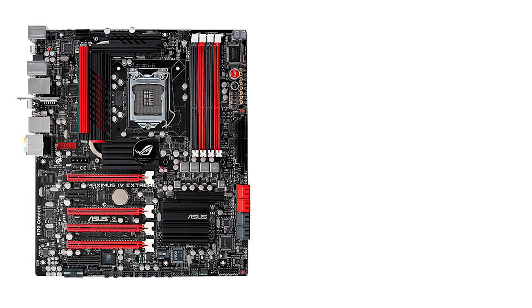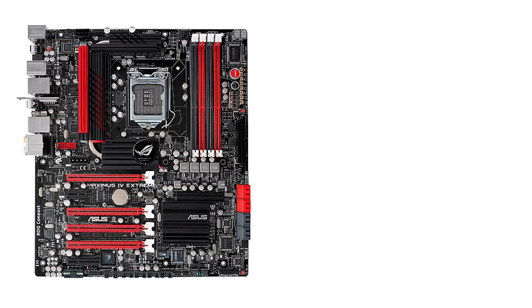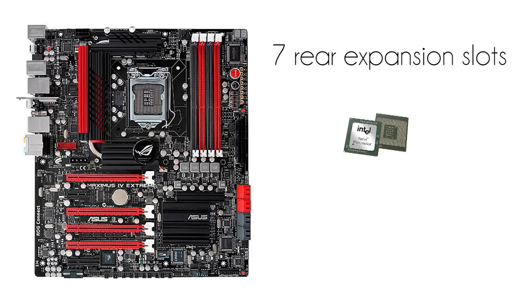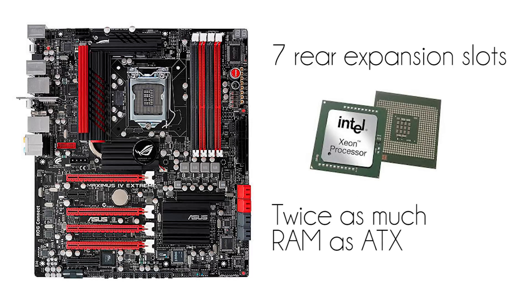On to bigger and better things! Extended or e-ATX motherboards are more expensive and larger than ATX and at up to 305mm tall by 330mm wide, they are big. They still have only a maximum of 7 rear expansion slots, but their width allows them to accommodate dual workstation or server-class CPUs, and up to twice as much RAM as their ATX equivalents.